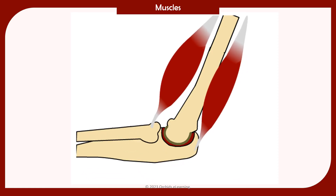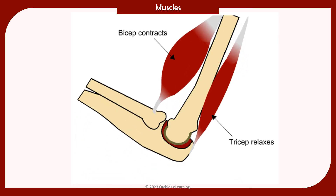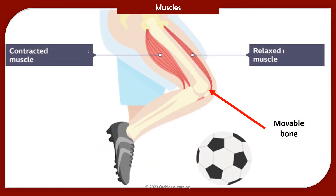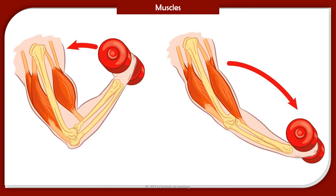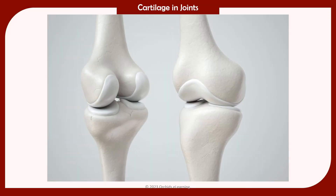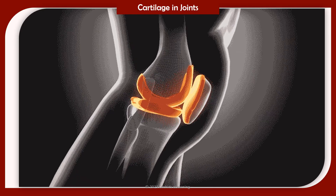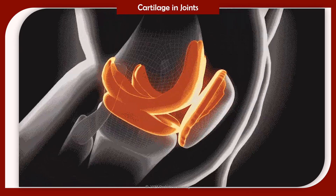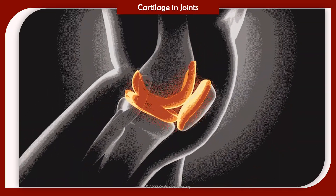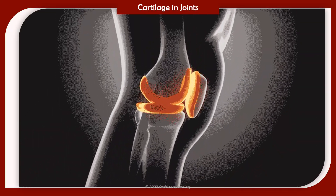Muscles bring about movement by contracting and relaxing. One end of a muscle is attached to a movable bone while the other end is attached to a fixed bone. When the muscle contracts, it pulls the movable bone. The ends of the bones are covered with a tough elastic tissue called cartilage. Cartilage makes the ends of the bones smooth and reduces friction between bones during movement. Cartilage is also present in various other parts of our body, like the nose and ear.